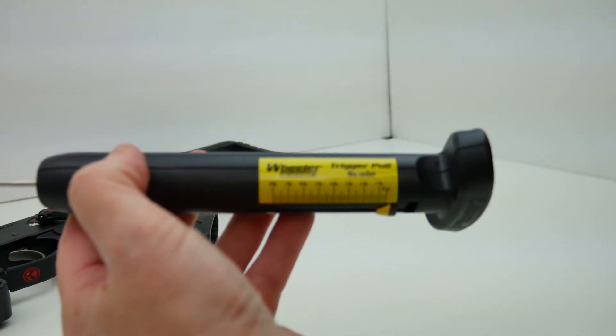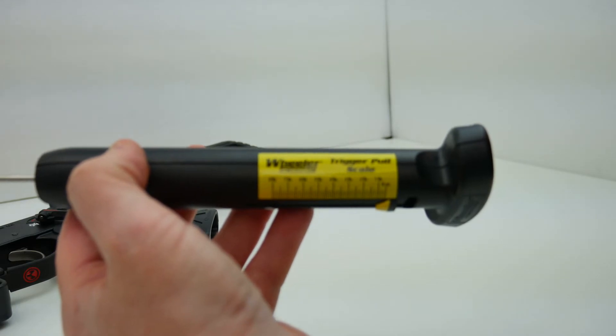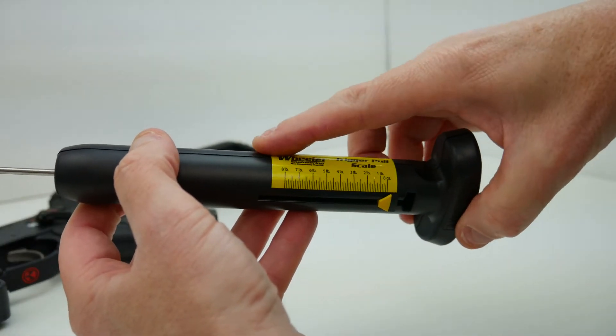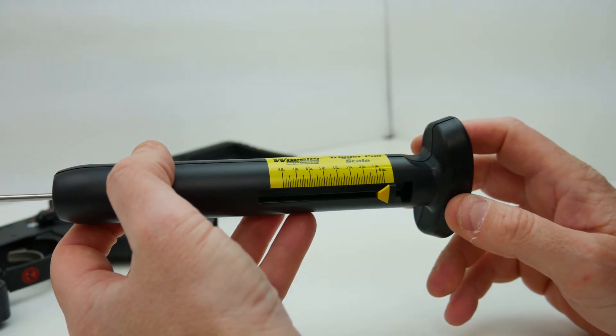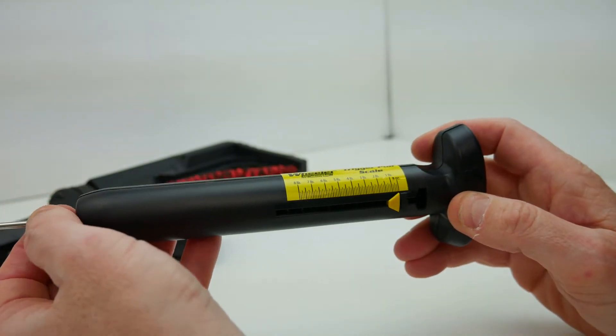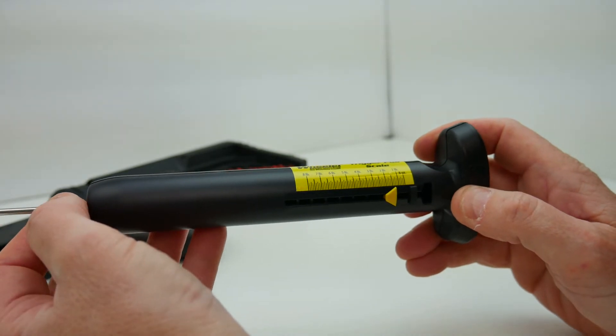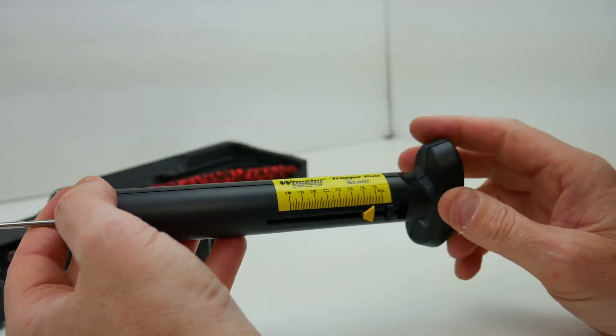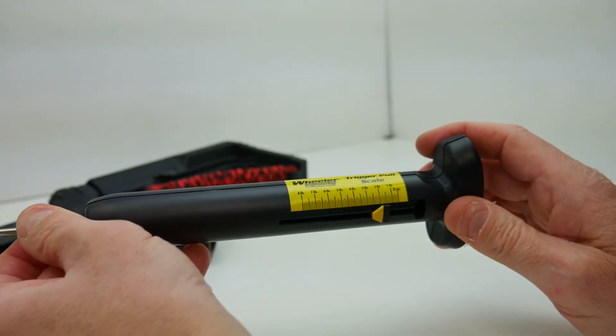We have a sticker here that needs to be put on correctly to measure a pull weight. You can see how this kind of works as we pull on this and this pops back, it leaves this little yellow marker at a certain spot.